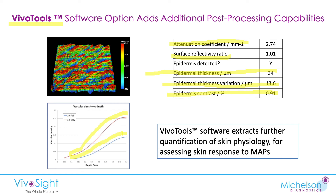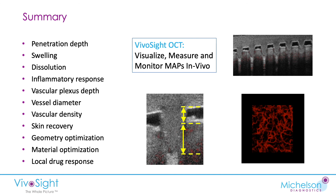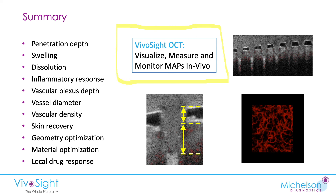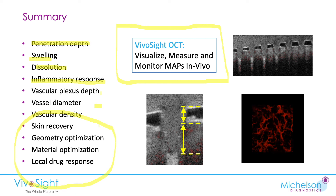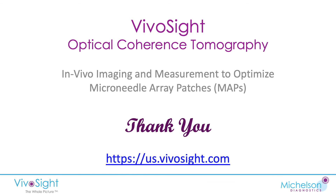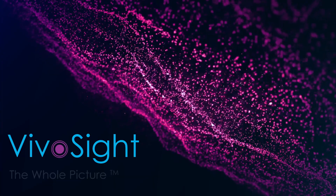So in summary, VivoSight OCT gives you a very powerful tool for visualizing and monitoring MAPs — ex vivo, in vivo, and post removal. It can be used to measure penetration depth, swelling and dissolution behavior, inflammatory response of the skin, and details like vascular plexus depth, vessel characteristics, and skin recovery. This is all very useful information to enable you to optimize MAP design for your application, for the very best results in your clinical studies. Thank you for listening.